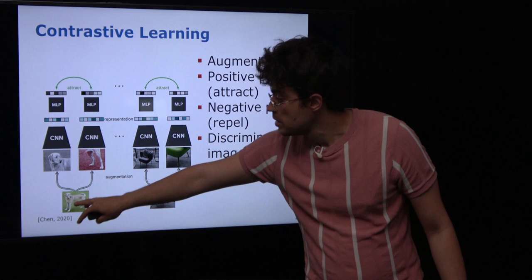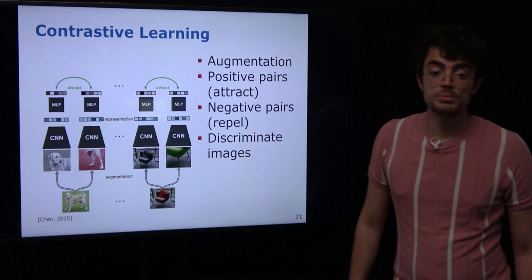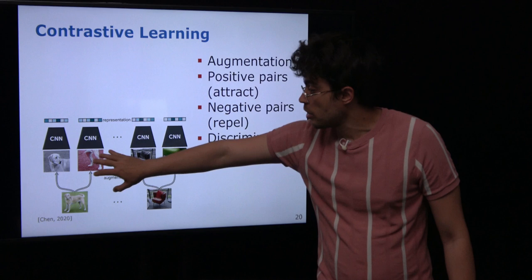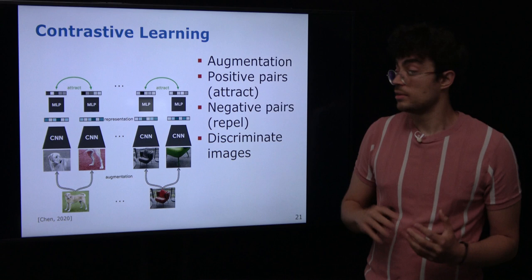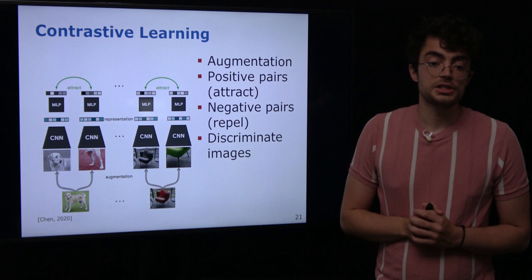For images from different sources, you want them to be as different as possible. For example, we generate two versions of a dog image — the two representations should be as similar as possible. But when we compare the dog image with chair images, we want them to be as dissimilar as possible. In that way we can achieve clustering where images of the dog are close together in the learned feature space while being separated from images of a chair.